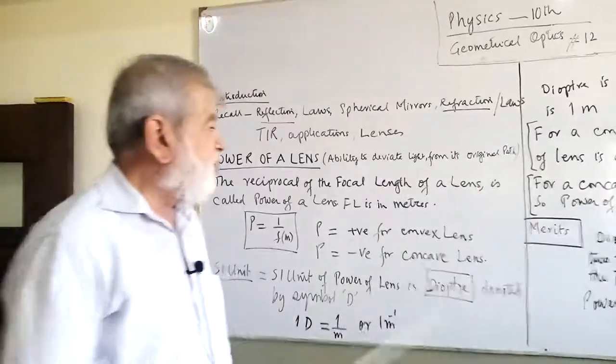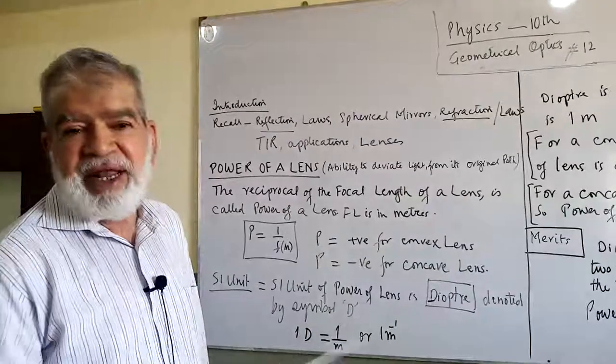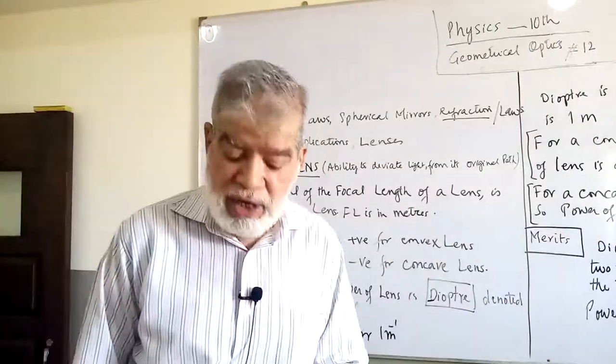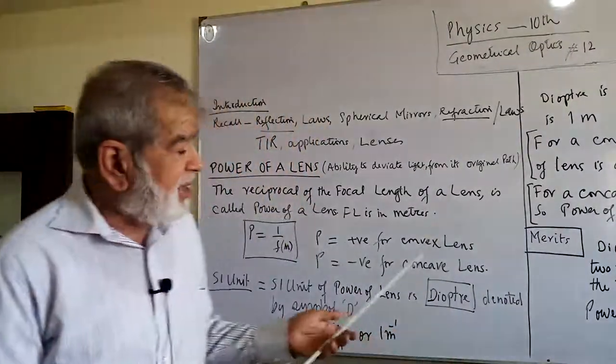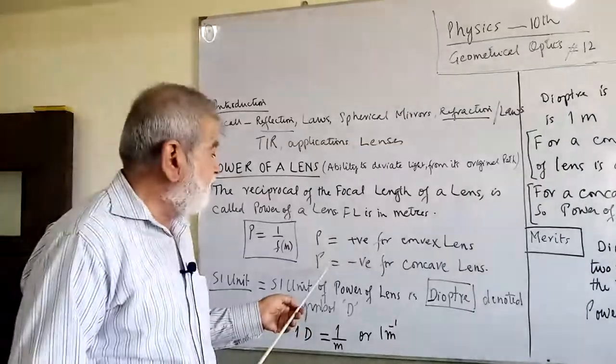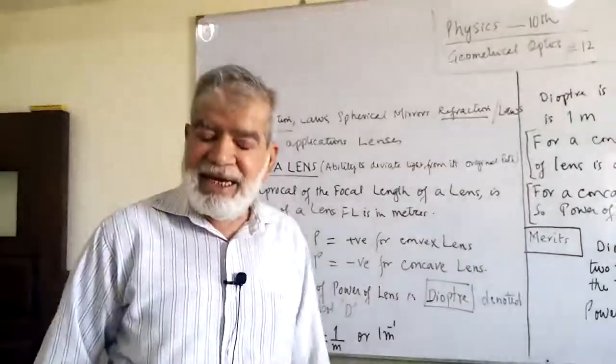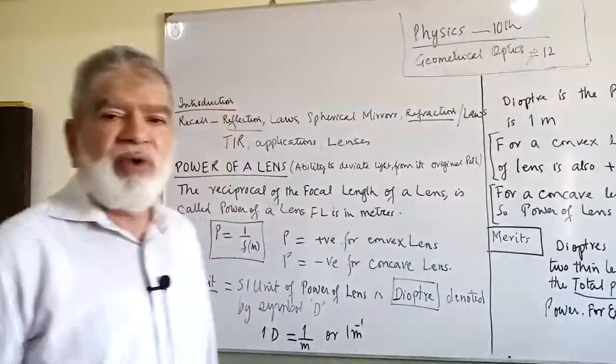The power of the lens is positive for convex lens and negative for concave lens, because the focal length of a convex lens is positive and the focal length of a concave lens is negative, therefore it is virtual or imaginary, so the power of the lens will also be negative.